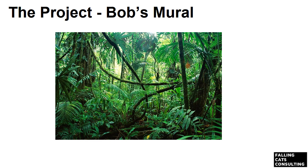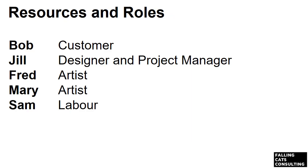Bob owns a cafe in Sydney, Australia, and has a boring blank outside wall. He wants a big mural of a jungle scene on the wall to attract custom. He has engaged his designer friend Jill to get the job done. Bob returns from leave on the 22nd of January 2019, and he wants the project to start on Wednesday the 23rd of January 2019. Let's look at the resources and roles. Bob is the customer. Jill is the designer and project manager — she gets to choose who works on the project and manages it. She's chosen Fred and Mary, who are artists, and also Sam, who is a labourer.